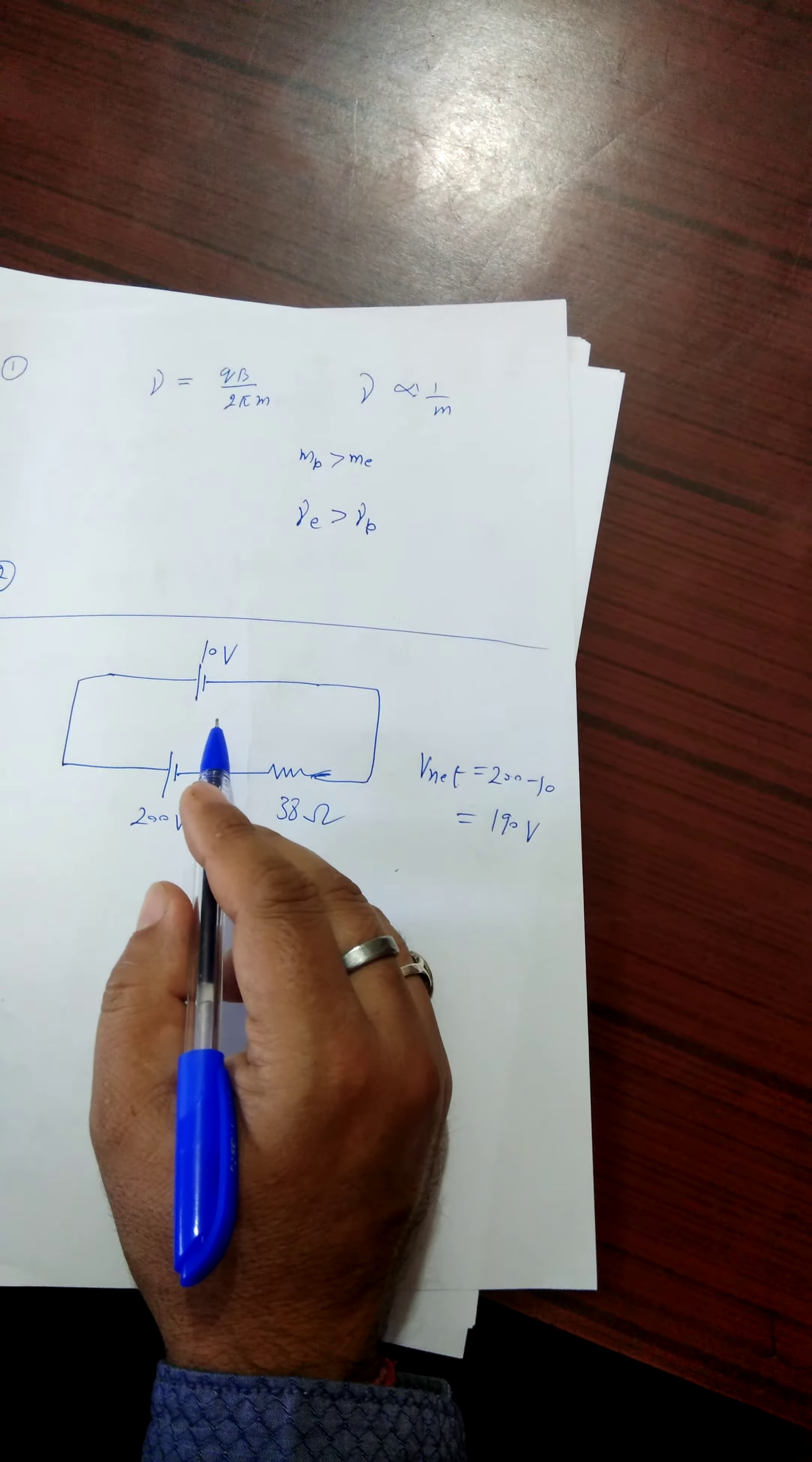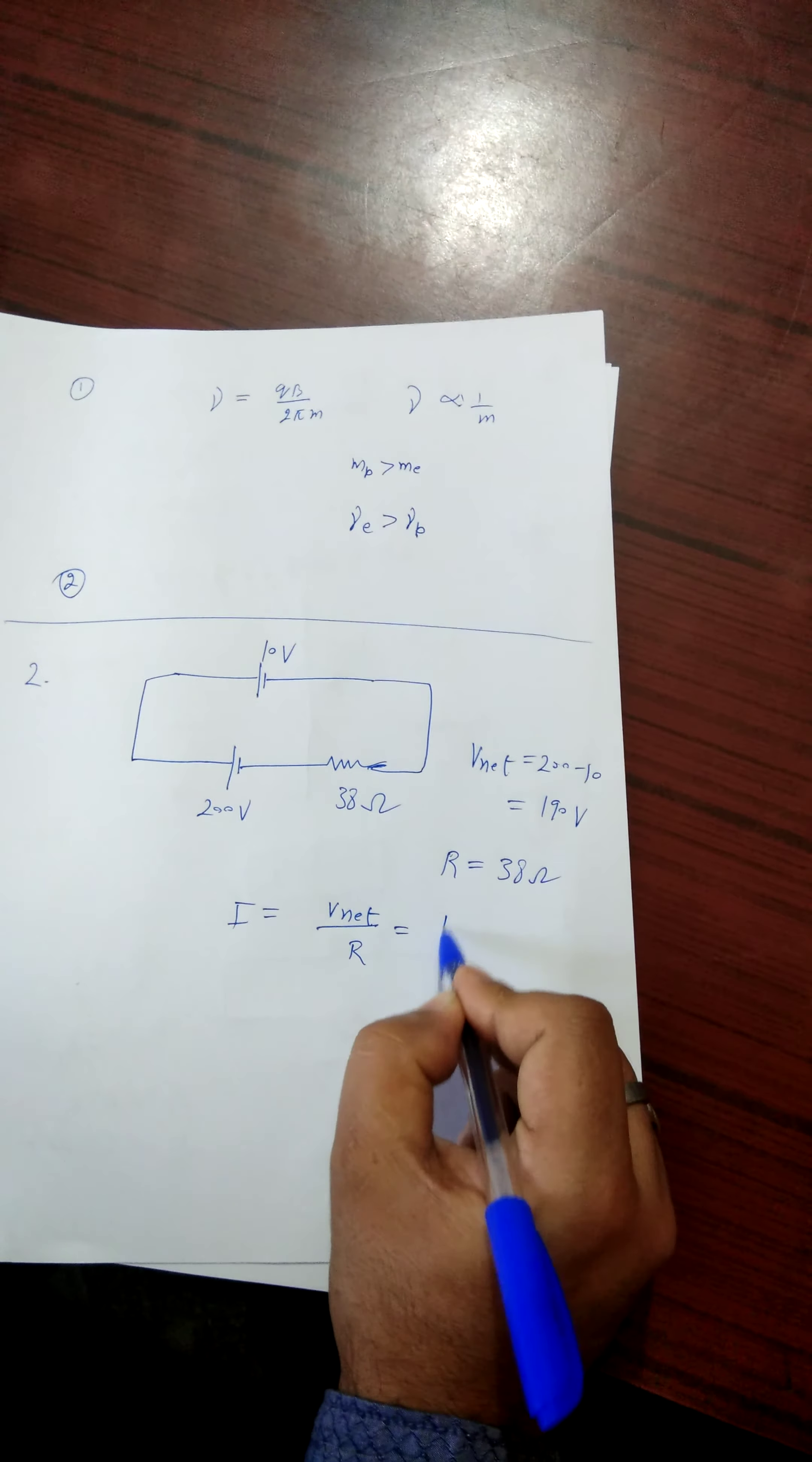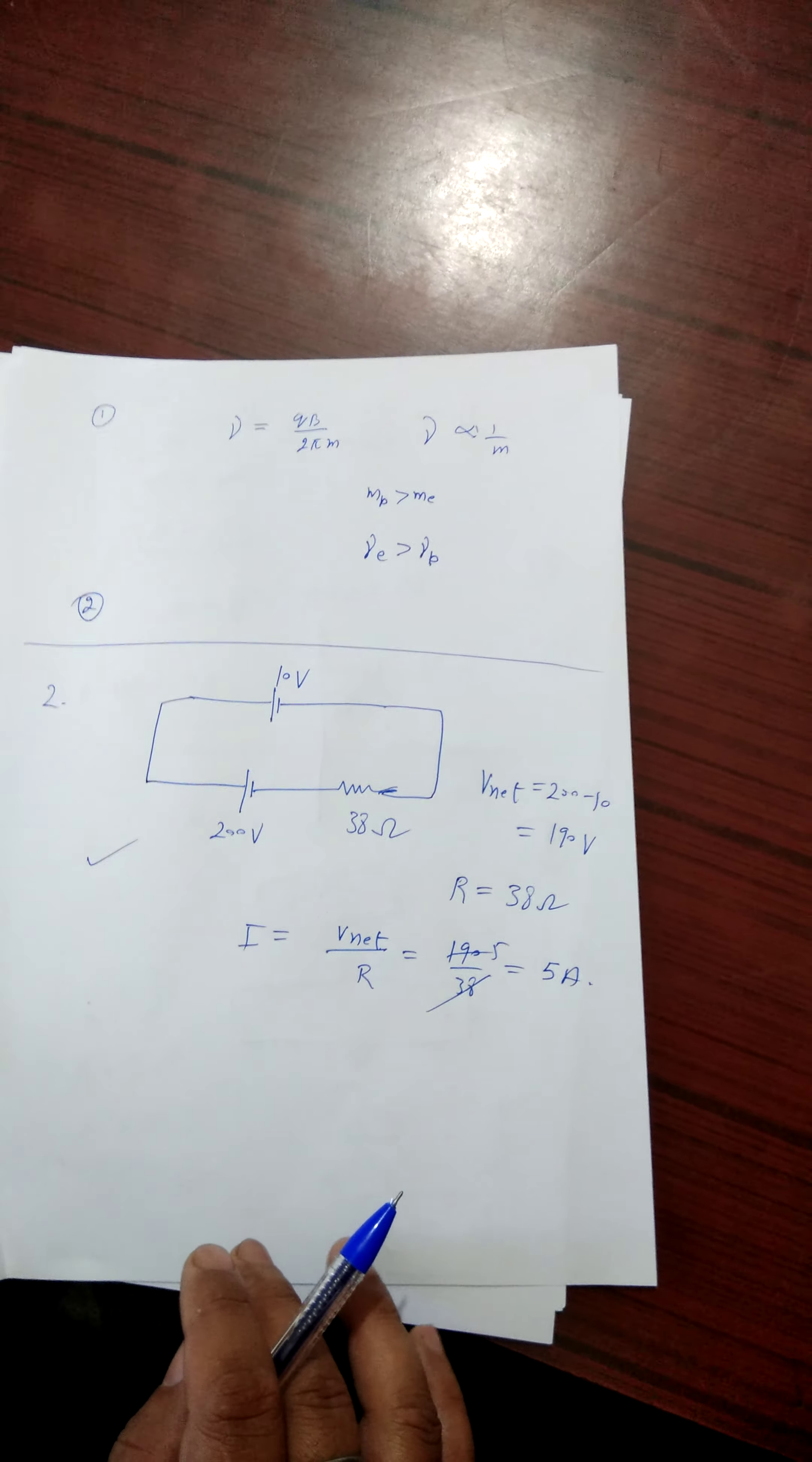Internal resistance is negligible. Therefore, the resistance is 38 ohm. Therefore, current through the circuit is net voltage over R, that is 190 over 38, and it is divided by 5. That's why 5 ampere current is flowing in the circuit. So this is the answer of the second question of section 2nd.